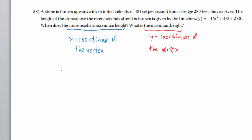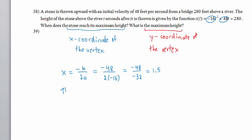The x-coordinate of the vertex is the opposite of b divided by 2 times a. b is 48, so we have negative 48 divided by 2 times a. a is negative 16. We have negative 48 divided by negative 32, that is 1.5. So the stone reaches its maximum height at t equals 1.5 seconds.